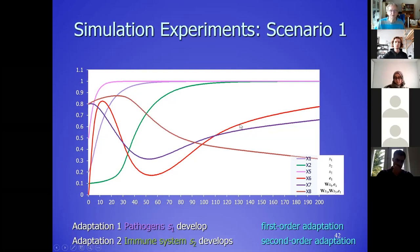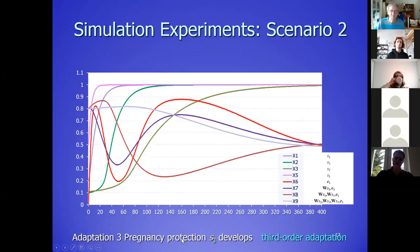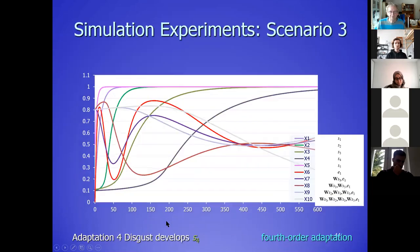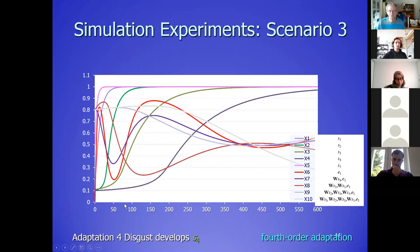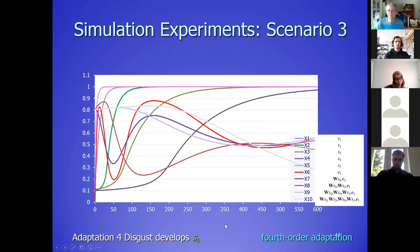Then we have the next steps in evolution. Pregnancy develops, and because the immune system had to be suppressed to become pregnant, your health will be less. Finally if we also have disgust — here you can see the pregnancy developing and then the disgust comes in. Because of the disgust you avoid dangerous things more, and therefore your health will be better again. That's the whole story of this evolutionary analysis.